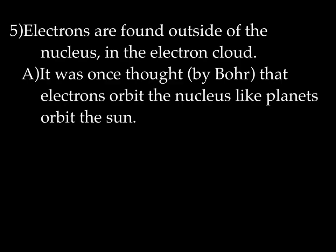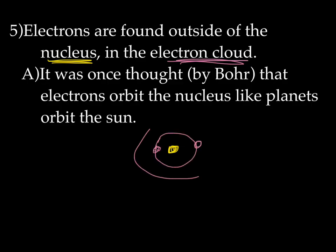Electrons are found outside the nucleus in what we call the electron cloud. It was once thought by Bohr that electrons orbit the nucleus like planets orbit the sun. Let me draw a quick picture — a model of the atom that most of you have probably seen. So this is a model that most students are familiar with, because it's an easy model to draw.